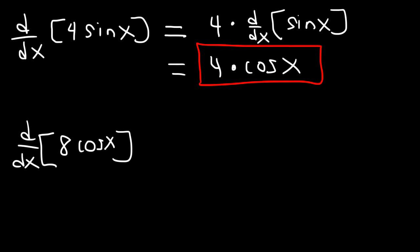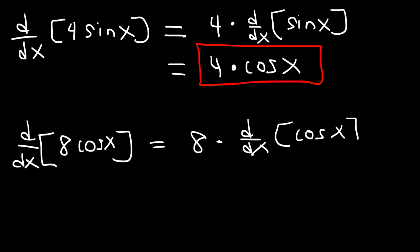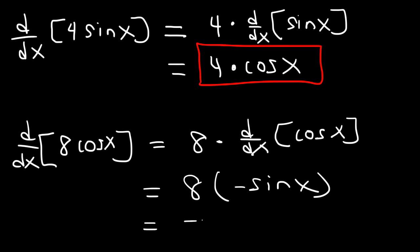For the second example, what is the derivative of 8 cosine x? This is going to be 8 times the derivative of cosine x. The derivative of cosine is negative sine, so the final answer is going to be negative 8 sine x.